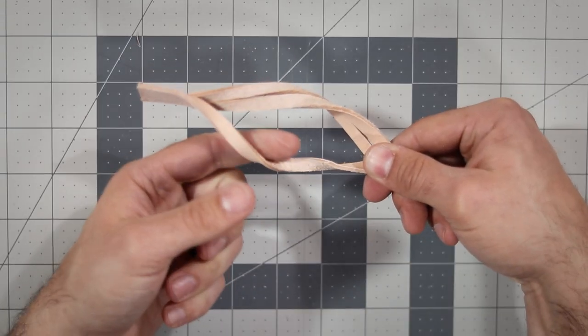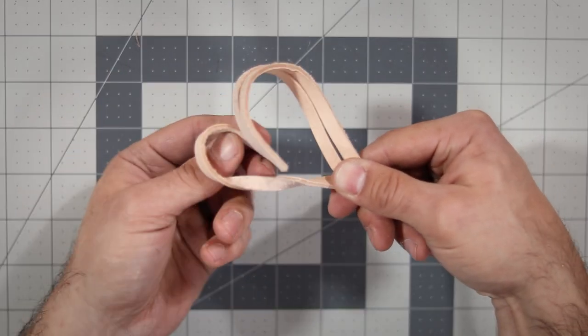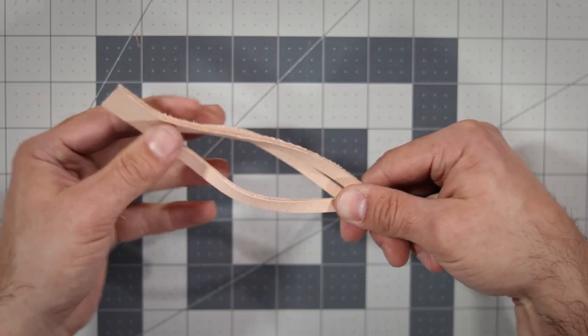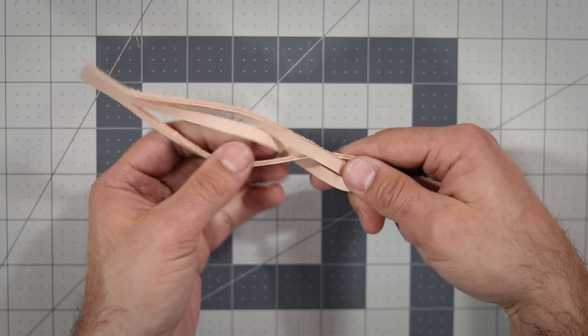Now you see this gap that opened up on our left side? By just folding the far end under and through that space, all of the strips straighten out like magic.